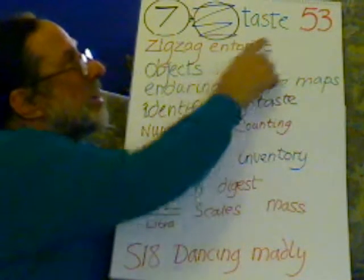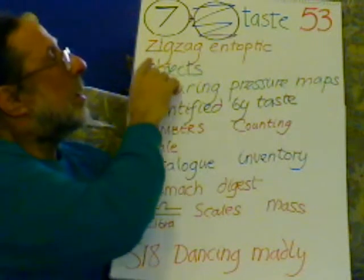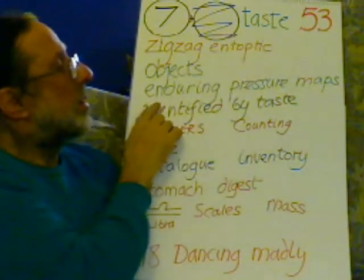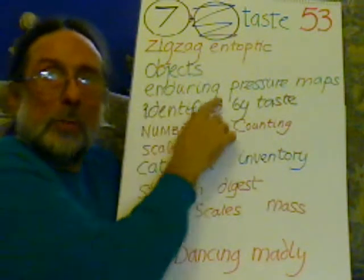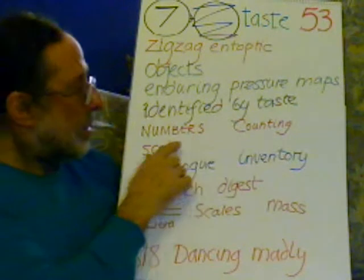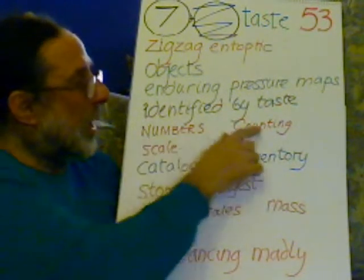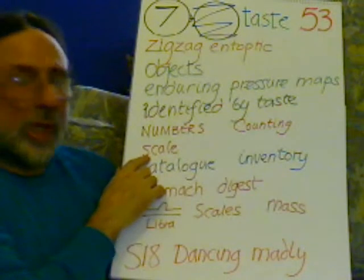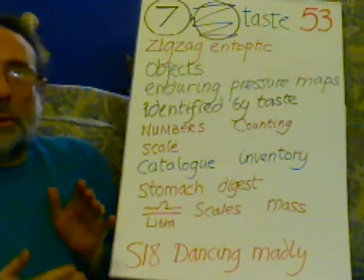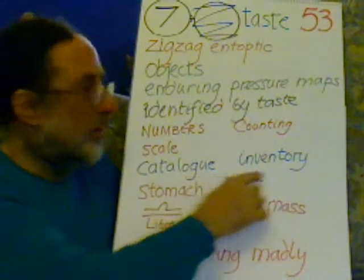Step 53: the sense of taste, the zigzag entoptic. These are objects identified by taste, an object being an enduring pressure map identified by taste, and where it's counted — numbers counting — hence the scale, but also scaling an object up or down in the circumstances. This is a catalogue or an inventory.